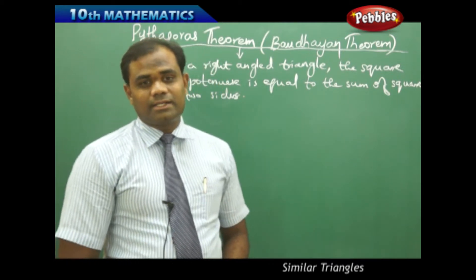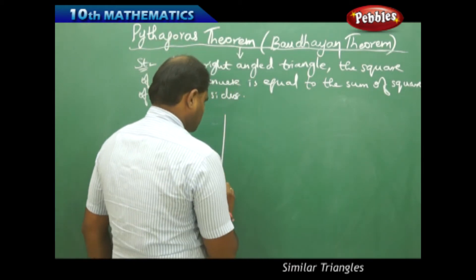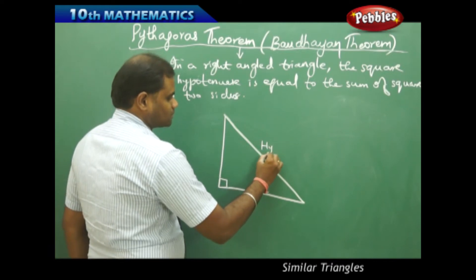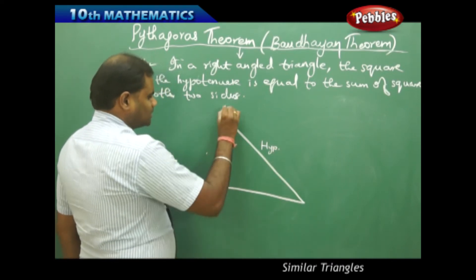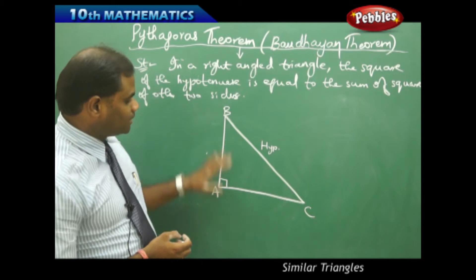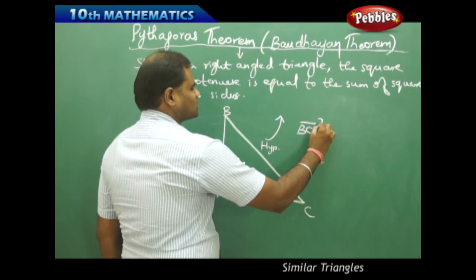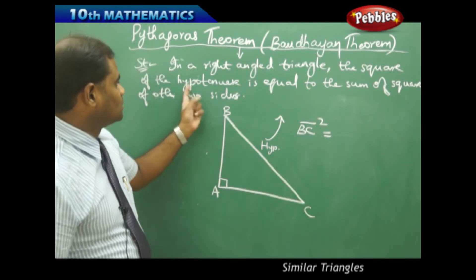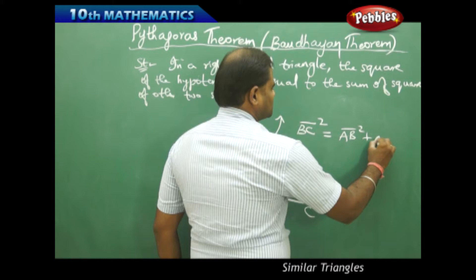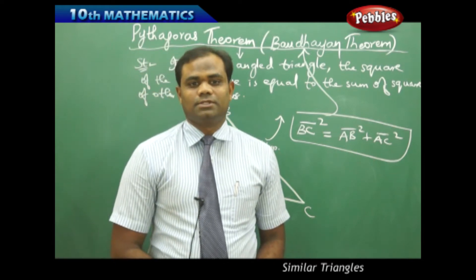For doing the proof, let's consider a right angled triangle. Here I have a right angled triangle where one of the angles is 90 degrees. This side is called the hypotenuse and these are the other two sides. If I take the right angled triangle ABC, then BC is the hypotenuse and the other two sides are AB and AC. The Pythagoras theorem states that BC squared, the square of the hypotenuse, equals AB squared plus AC squared.